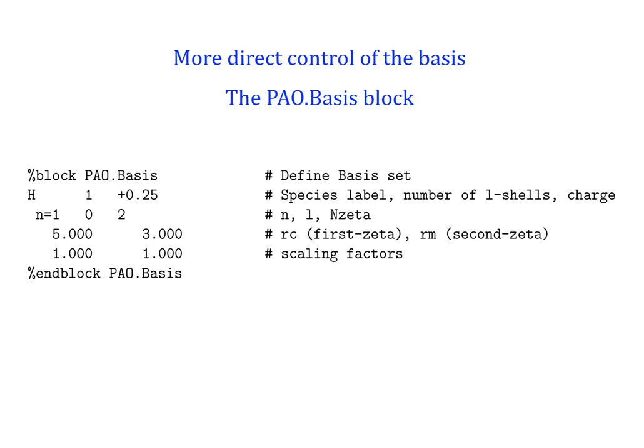One can have much more direct control of all the parameters in the basis by going to a block in the input file called PAO basis. Within that block one specifies many of these parameters. Here it is shown only for hydrogen, but you can put a block like this, or pieces of this block, for each one of the elements you're dealing with. You can even specify whether you want to charge the atom for the purpose of generating the basis — it has nothing to do with the charging of the atom in the system afterwards.